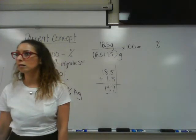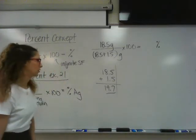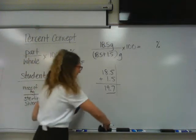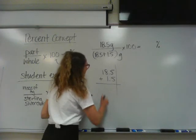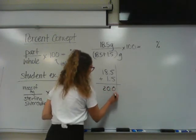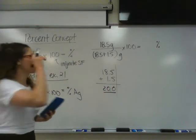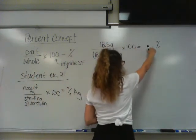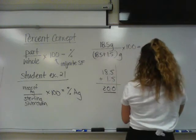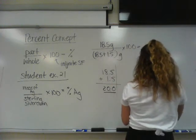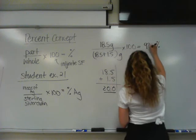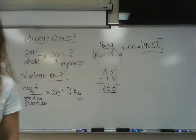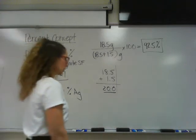Three sig figs. Three sig figs. Infinite. I want how many sig figs in my answer? Three. So we're going to divide that out. Multiply by 100. I got 92.5% silver. Make sense?